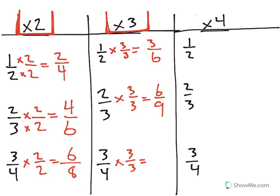So, as I continue these, you'll see I'm now multiplying both numerator and denominator by 3. 1 half is equal to 3 sixths. 2 thirds is equivalent to 6 ninths. And 3 fourths is equivalent to 9 twelfths.